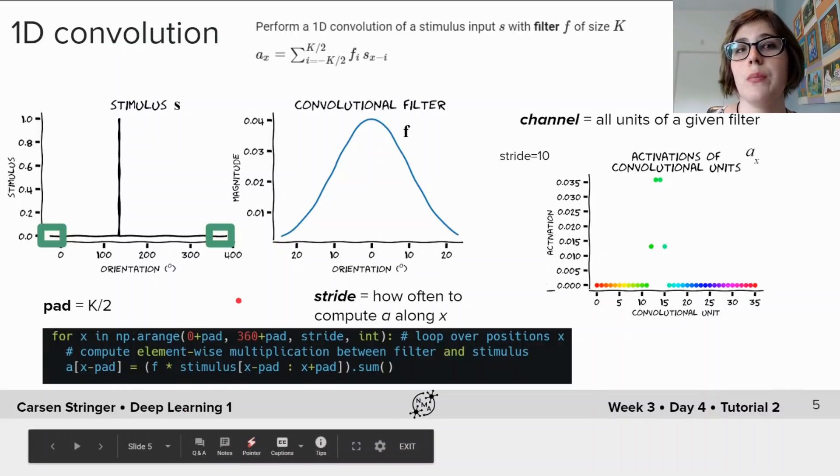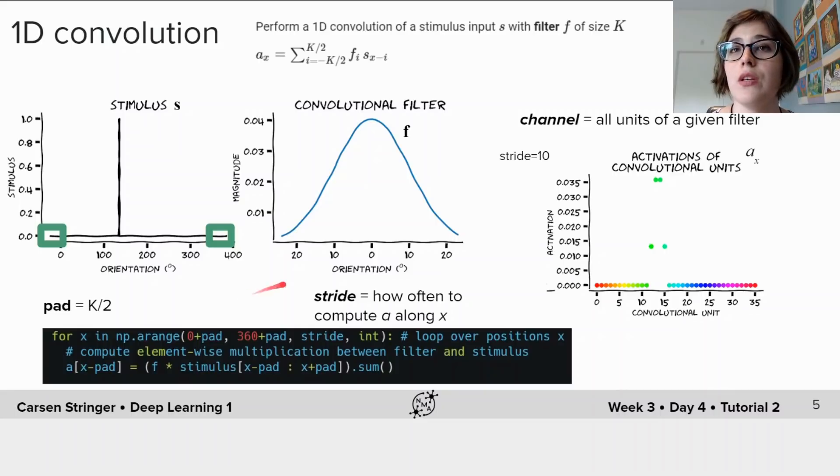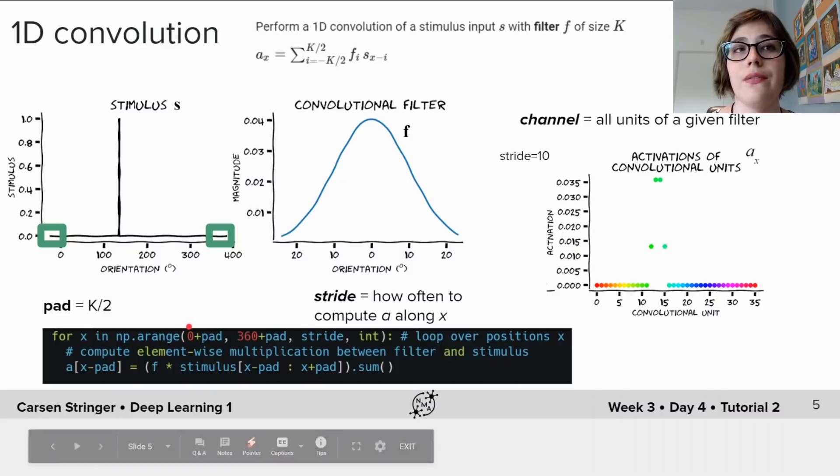Instead we're going to use PyTorch, and also in PyTorch you can optionally use GPU acceleration to make these convolutional computations even faster.